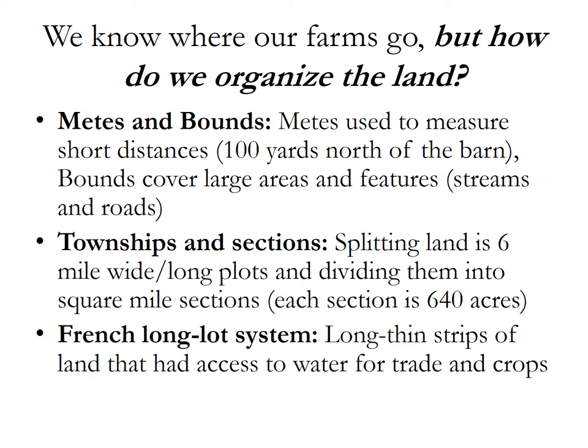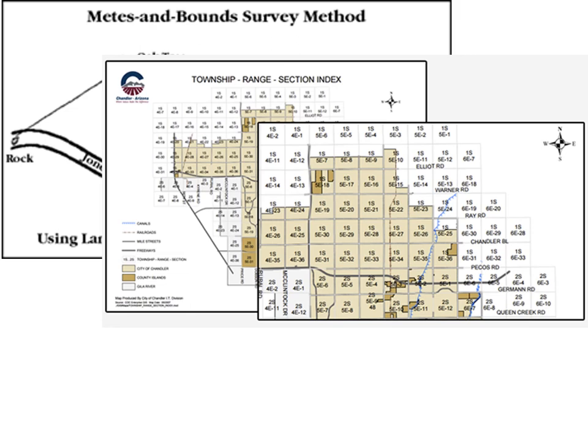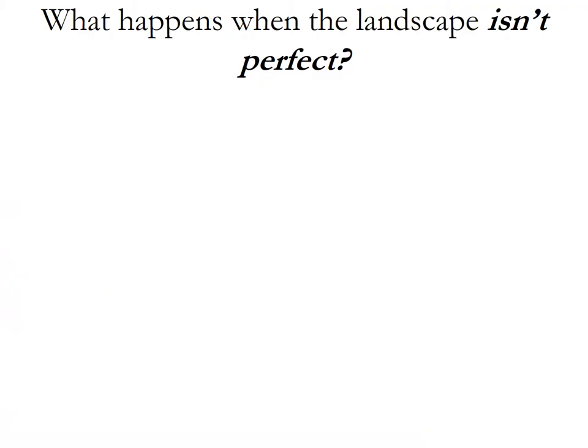Then you have the French Longlot System, which uses long, thin strips of land where every single farm has access to water — like along the Mississippi, where French colonists established farms not only for irrigation but also so farmers could transport their crops down the river. Here's a picture of a Metes and Bounds survey. And here is the Township and Range section. And finally, the Longlot System, where you have these long, thin farms all touching the river.